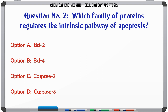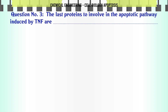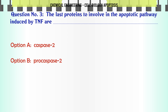Which family of proteins regulates the intrinsic pathway of apoptosis? A. Bcl2, B. Bcl4, C. Caspase 2, D. Caspase 8. The correct answer is Bcl2.